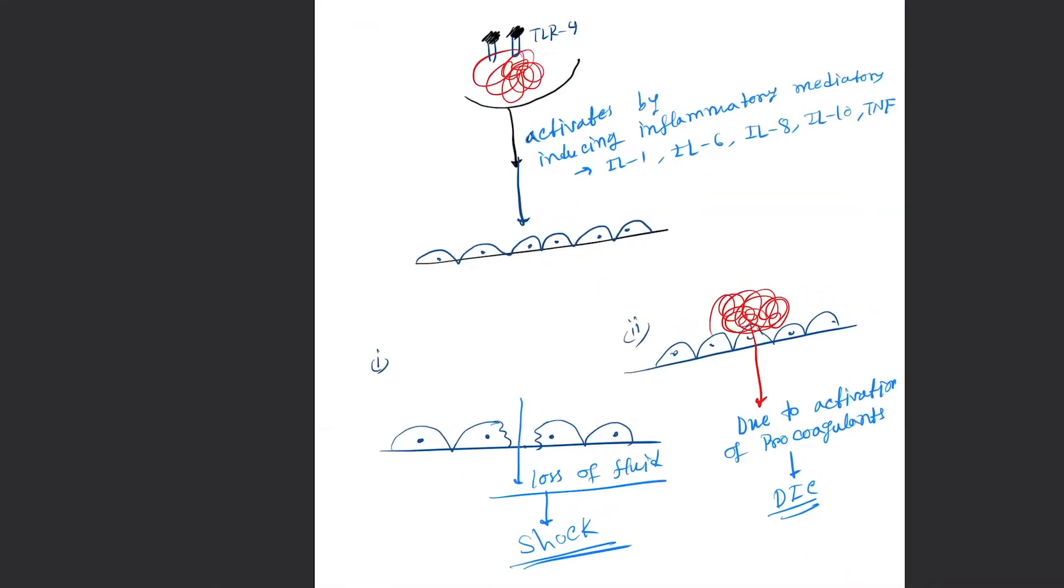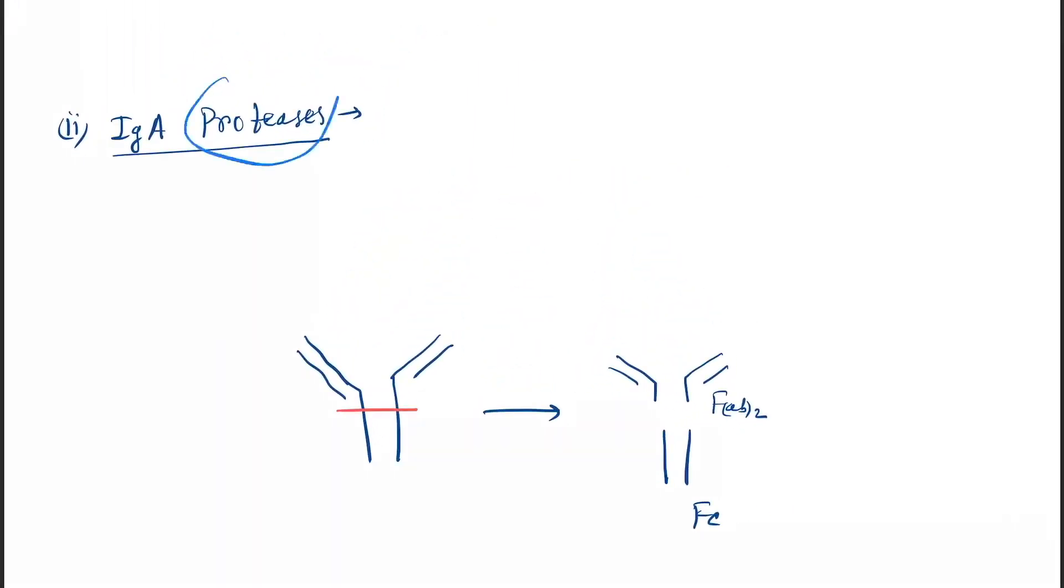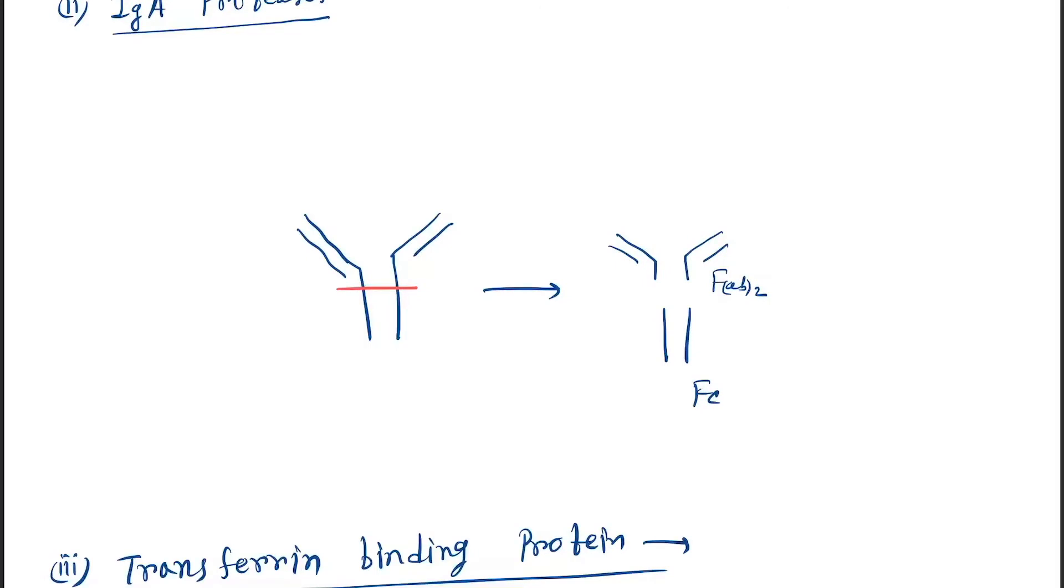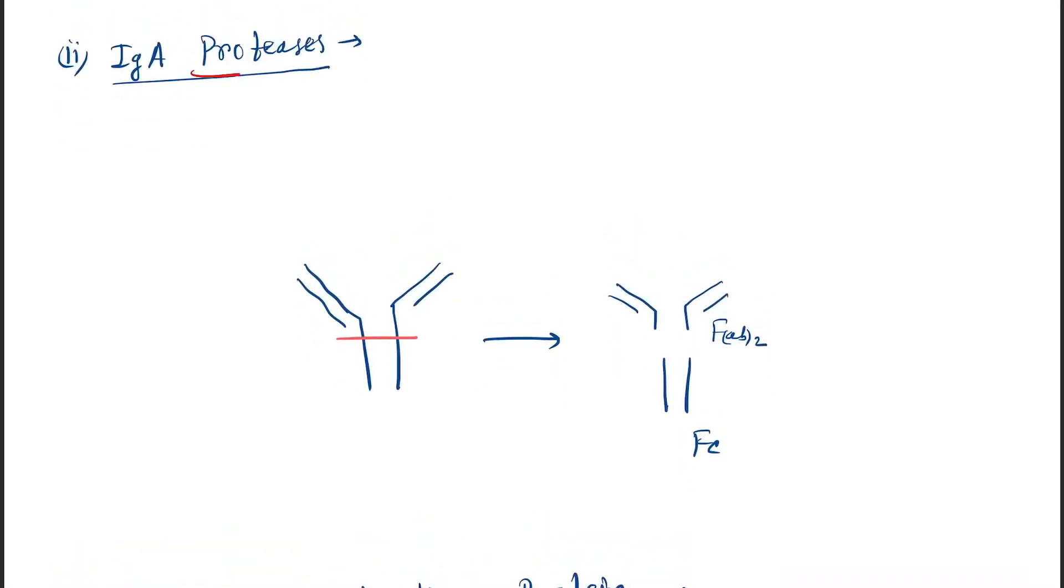This is the endotoxin. Now come to the IgA protease. Proteases will cause the lysis of the IgA. They will act, protease will act on this site and will break down into two fragments, Fab and Fc.